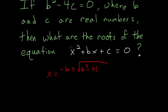on the x squared term, which is 1, times the constant term, which is c. And this is all divided by twice the coefficient on the x squared term, so twice 1 or 2.